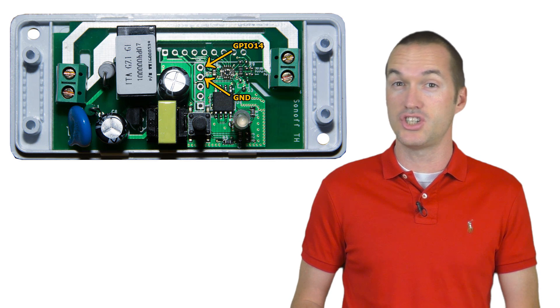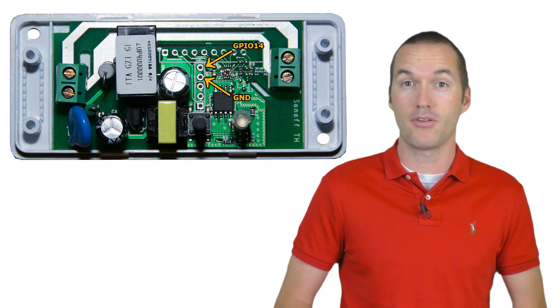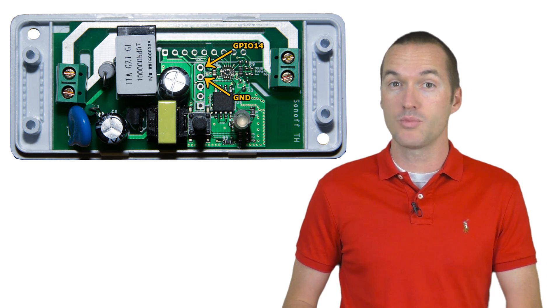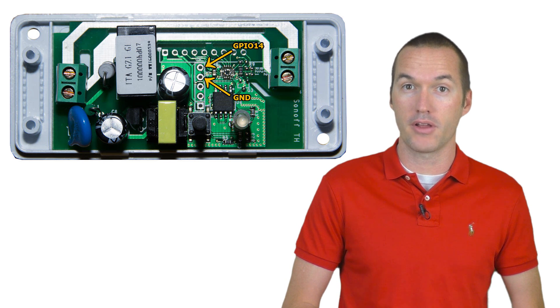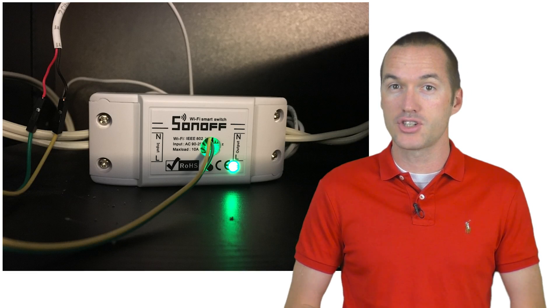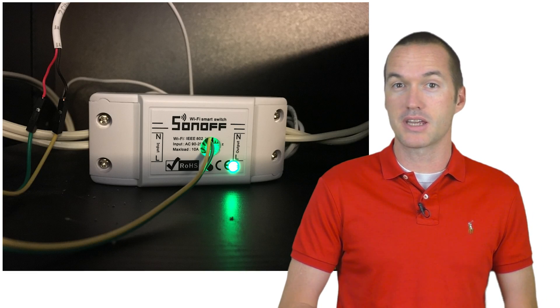All we need to do is connect our reed switch to GPIO 14 and ground on your Sonoff. You can either solder some wire directly to the headers we put on earlier, or you can use a female jumper wire to make it a little easier to connect and disconnect.